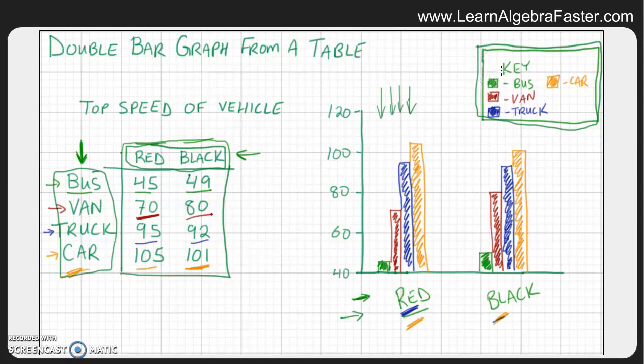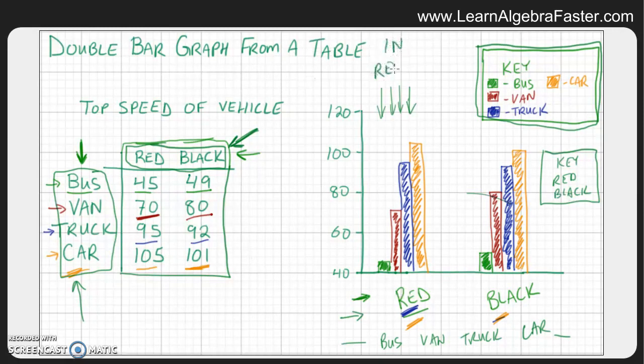So again, just in review, if we did this in reverse, kind of like we did the first go round of this example, we chose to put the type of vehicle down here. So we had buses, van, truck, and car on the horizontal axis. And if we do that, then we have to put the color in the key. And so the key actually looked like reds and black. So that's another thing that's really cool about a double bar graph is that you can actually do it in reverse and still get the information on the table and it still looks nice and clean.